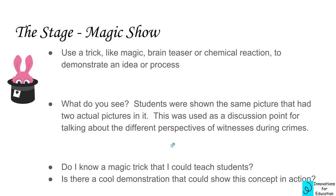The magic show hook uses a trick, brain teaser, or even a chemical reaction to demonstrate some idea or process. The example called 'what do you see' showed students the same picture that had two images in it — like a man sitting on a hill that, looked at longer, reveals a little house in a forest. Different kids saw the different pictures first, and this was used as a discussion point about the different perspectives of witnesses during a crime, in a forensics unit. Do you know a magic trick you could teach? Is there a cool demonstration that could show the concept in action?